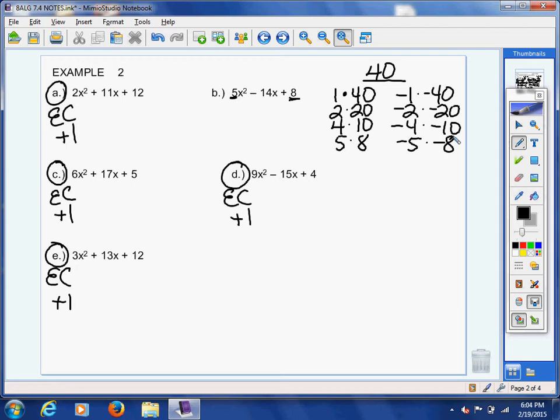Only one of those adds up to be negative 14, and hopefully you are looking at this set right here. Negative 4 plus negative 10, there's your negative 14. So we're going to rewrite it. Drop down 5x squared. We're going to rename negative 14x as negative 4x and negative 10x, and then we're going to drop down our 8.